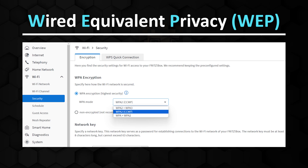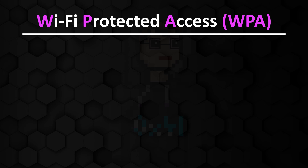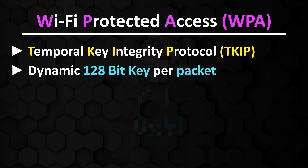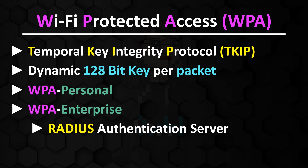The need for a more secure standard was high, which resulted in the development of Wi-Fi Protected Access, WPA for short. Instead of the insecure RC4 algorithm, a much stronger encryption is used here with the Temporal Key Integrity Protocol, TKIP for short. TKIP dynamically generates new 128-bit long keys for each packet. WPA comes in two flavors: WPA Personal, used for home and small office networks, and WPA Enterprise, mainly used in corporate environments. The biggest difference is a RADIUS authentication server, which is used with WPA Enterprise.